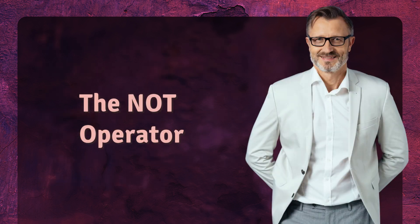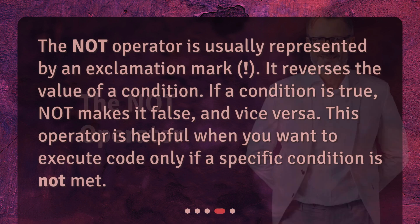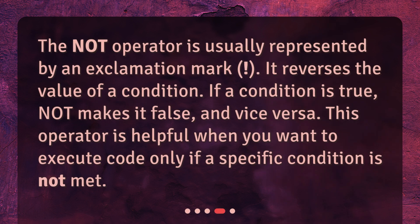The NOT operator is usually represented by an exclamation mark. It reverses the value of a condition. If a condition is true, NOT makes it false, and vice versa. This operator is helpful when you want to execute code only if a specific condition is not met.